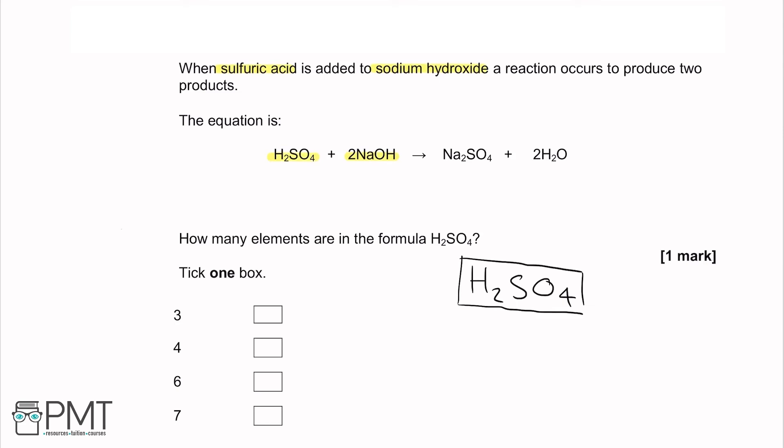The question asks how many elements are in the formula H2SO4. Elements are made of one type of atom, so the question is asking how many types of atoms are in H2SO4. We have hydrogen, sulfur, and oxygen — that is three types of atom, so the answer is three. A common mistake would be adding up the number of atoms, giving seven, which is why reading the question carefully matters.